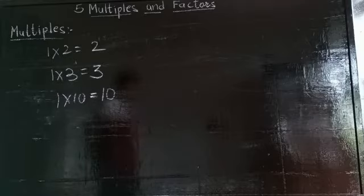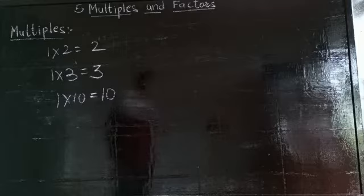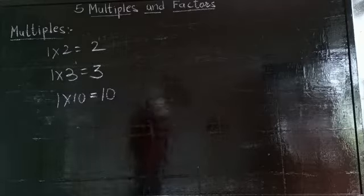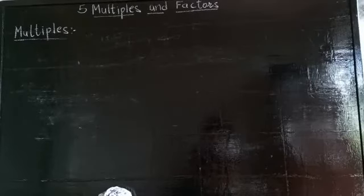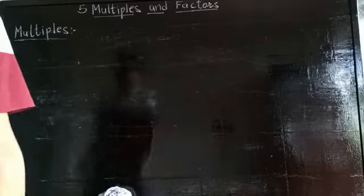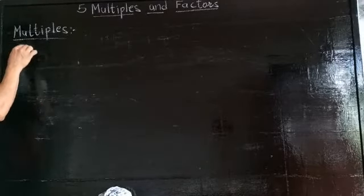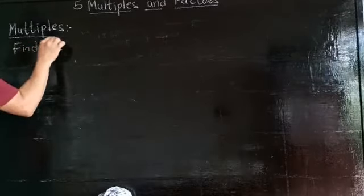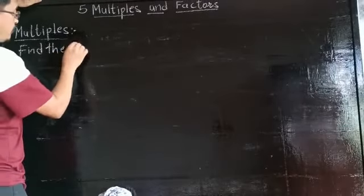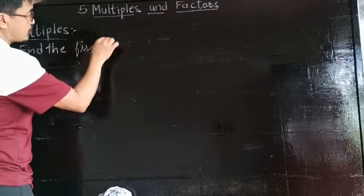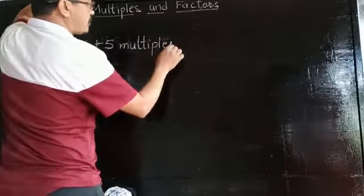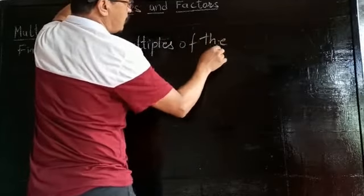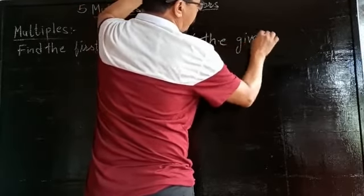I hope this makes it clear to you about multiples. I'll give you some more in the next class. Now let's find the multiples of some numbers. Find the first five multiples of the given numbers.